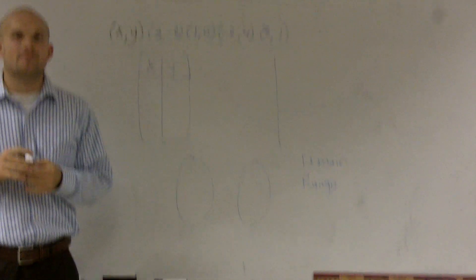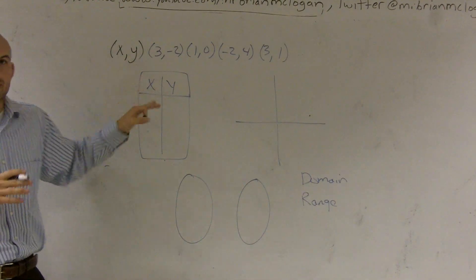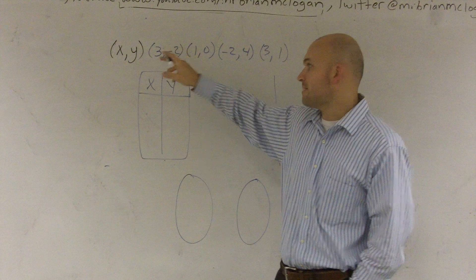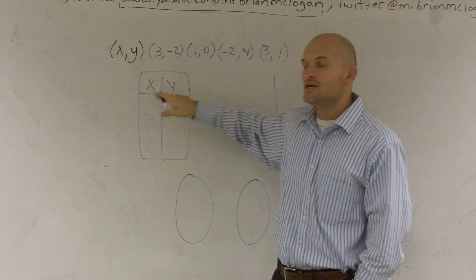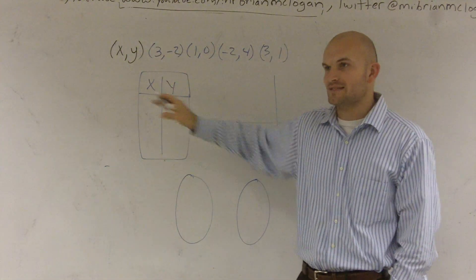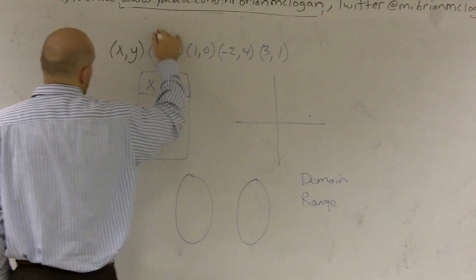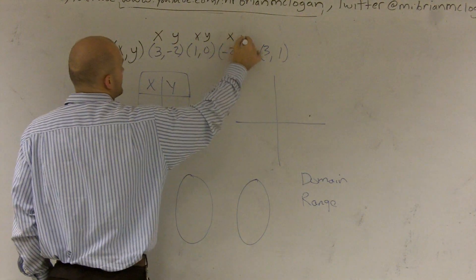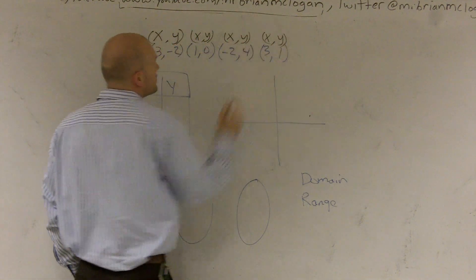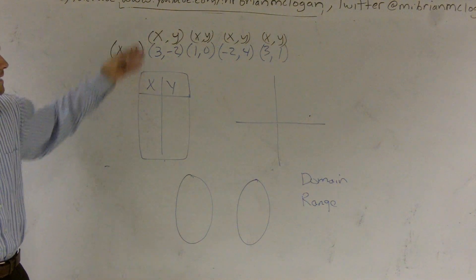What they want us to do is transform that to a table. Remember, we're just talking about the relationship between the two points. If we look at the ordered pairs, ordered pair has your X value and your Y value. On a table, I'm just going to transplant my ordered pair into my table.